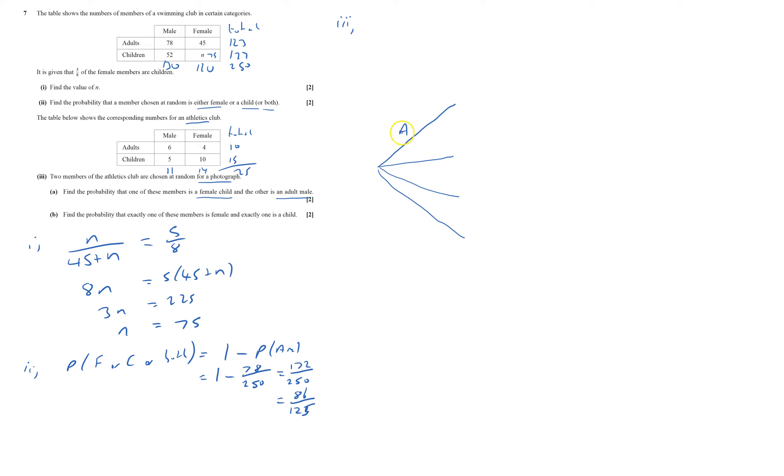So first child, the first person chosen for the photograph could be an adult male, it could be adult female, it could be child male, or could be child female. And then I could get exactly the same thing again. So adult male, adult female, child male, child female. So each branch has got to have four things going off it. I'm trying to get two going up and two going down so I can sort of identify which one's which better. So two going up and two going down.